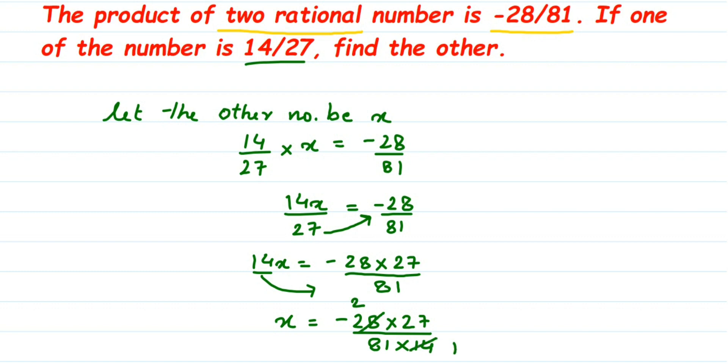We can cancel 81 and 27 in 9 table. 9 nines are 81 and 3s are 27. We can cancel 3 and 9 again in 3 table. 3 ones are 3 and 3 threes are 9. Now we are left with only 2 by 3 and there is a negative sign in the numerator. So minus 2 by 3.